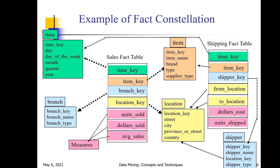In the fact constellation schema, we have two or more fact tables. Here, a shipping fact table is also present. These fact tables use some common dimension tables. In the figure, you can observe clearly that both the sales fact table and the shipping fact table use the item dimension table and the location dimension table. This looks like a collection of stars.